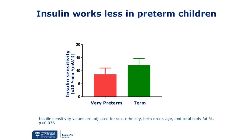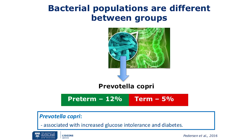When we looked at the bacterial population in these children, we found that a particular micro-organism called Prevotella copri is higher in the preterm group compared to the term group — more than double the percentage seen in term children. In the literature, Prevotella copri has been associated with glucose intolerance and diabetes.